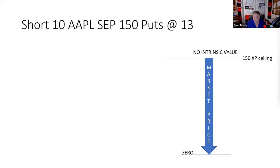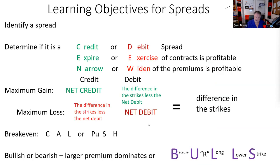So this is very foolish. What we're going to do is take part of our money and buy a lower strike put. Test question number one: can you identify a spread? A spread is long and short the same type of contract. If I'm going to turn this short put into a spread, I'm going to have to go long some puts. The eight things we need to do: identify as a spread, determine credit or debit, expire or exercise, narrow or widen, gain and loss, break-even, and bullish or bearish.